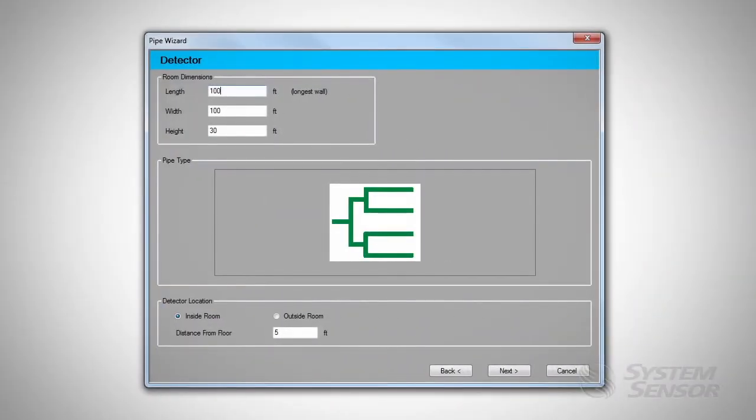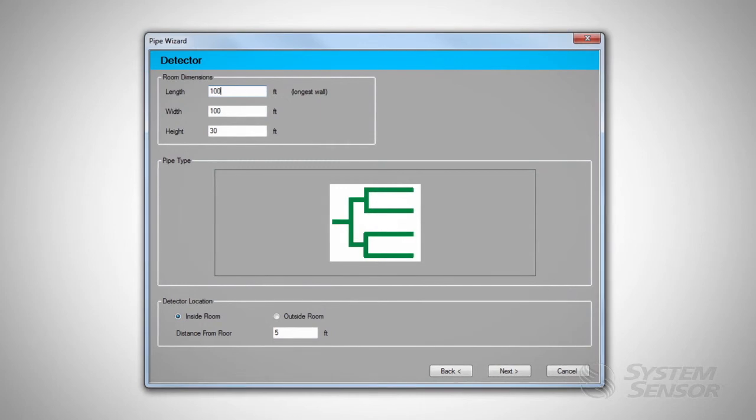PipeIQ includes a pipe wizard, which guides you through the process to design a pipe network for any application. With PipeIQ, you can also verify designs point-by-point, from pipe network layout to sampling hole sizes and detection sensitivity.